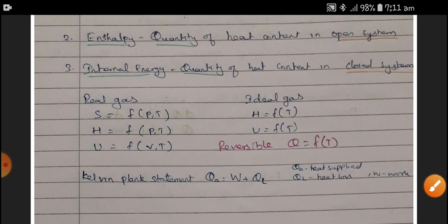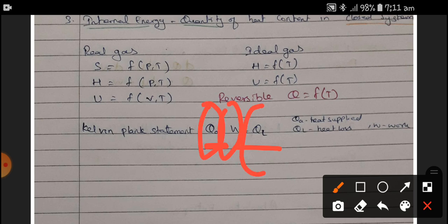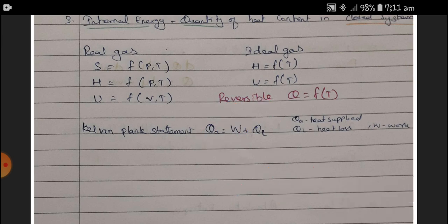The Kelvin-Planck statement states that heat supplied equals work done plus heat loss: Q_supplied = W + ΔU. Next, we discuss some of the measuring instruments and devices that follow these four laws.